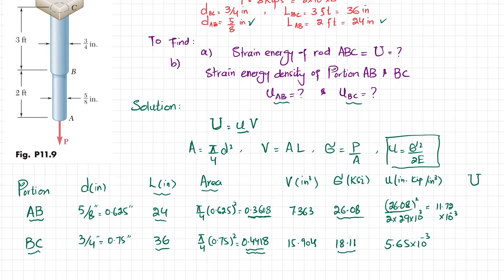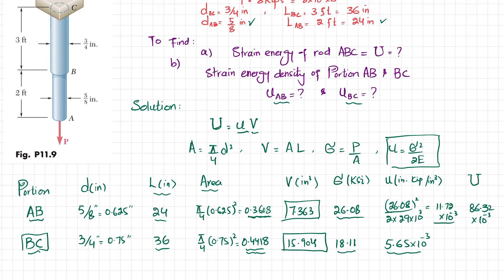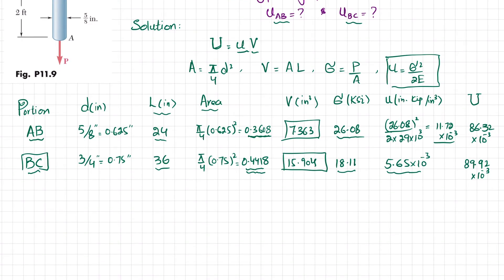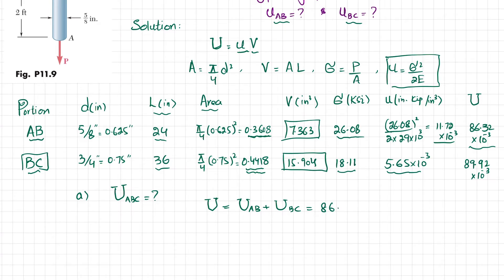Now calculating total strain energy for each portion using U equals u times V. For rod AB: multiplying strain energy density by volume gives 86.32 into 10 to the power minus 3 inch·kips. For rod BC: multiplying strain energy density by volume gives 89.92 into 10 to the power minus 3 inch·kips.